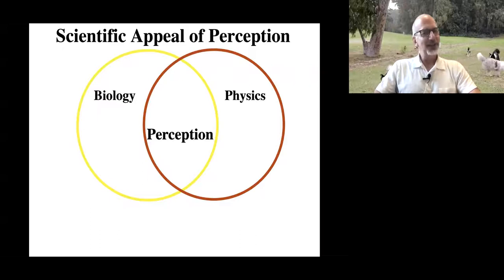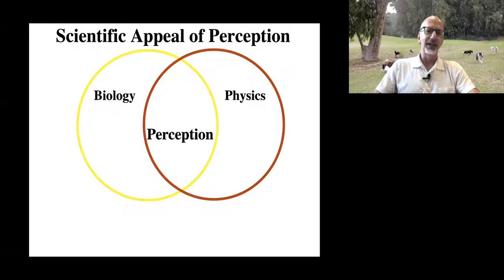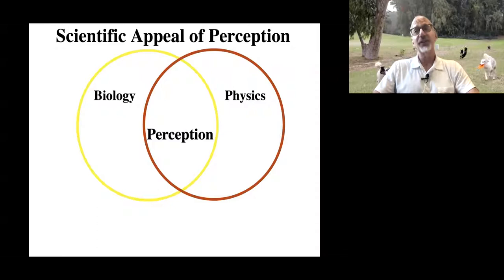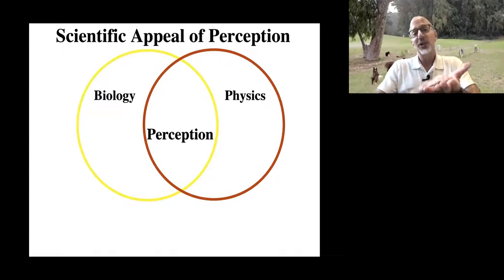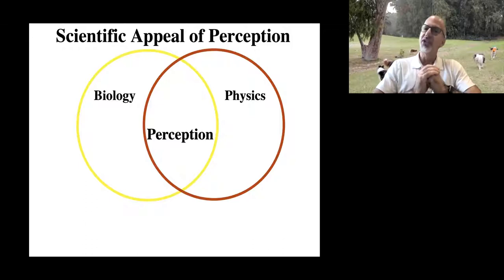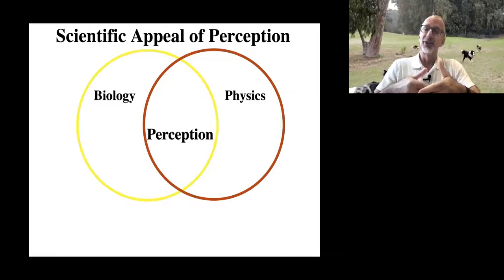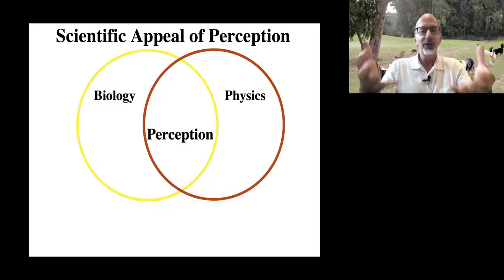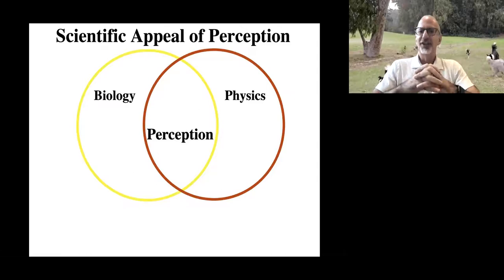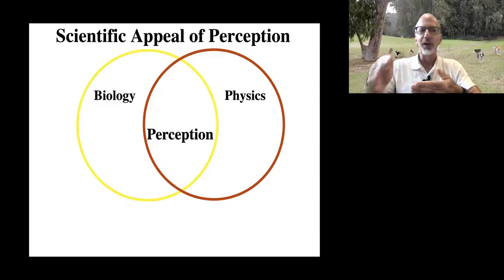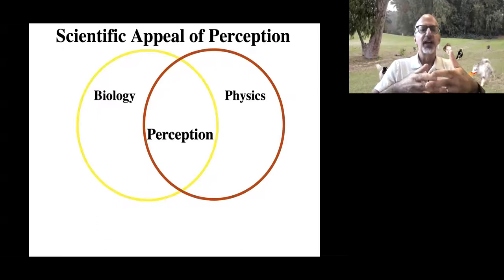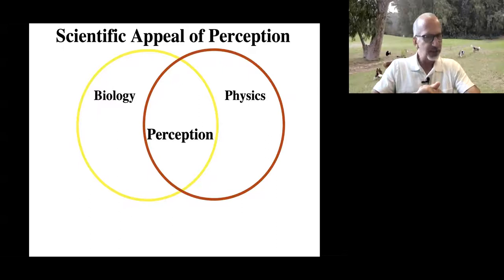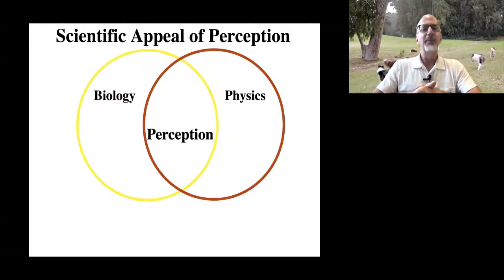Physics is also relevant to perception — not something people often think about. We talked about it in two ways: understanding what the physical dimensions are of light, sound, and mechanical pressure on our skin that construct the information our senses use. To understand what the brain does in perception, we need to understand what the eye does, and to understand what the eye does, we need to know what information out in the world the eye is going to pick up on. Obviously it's light — but what's the right description of the light?